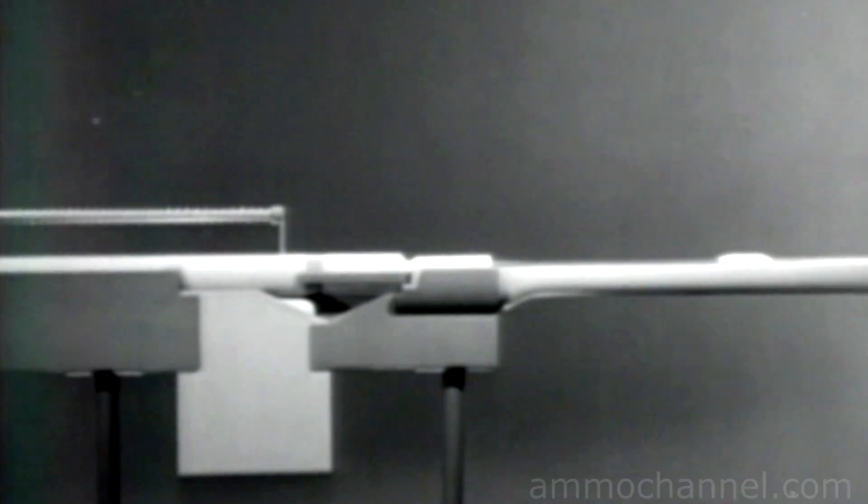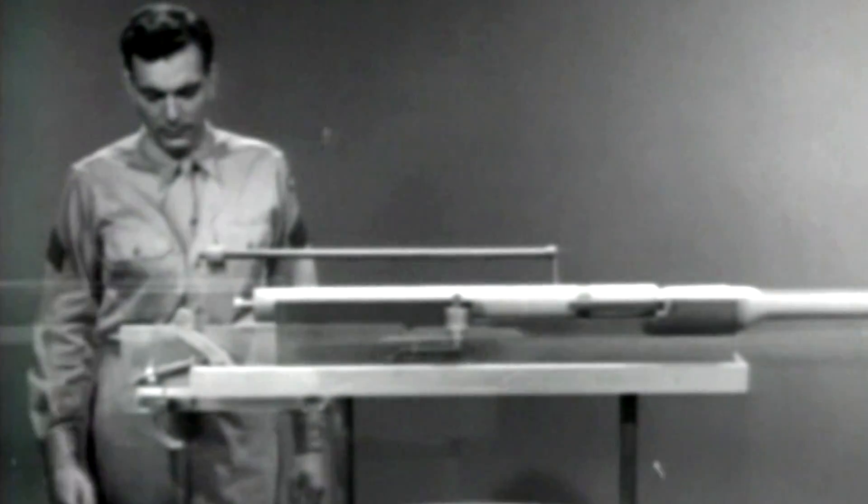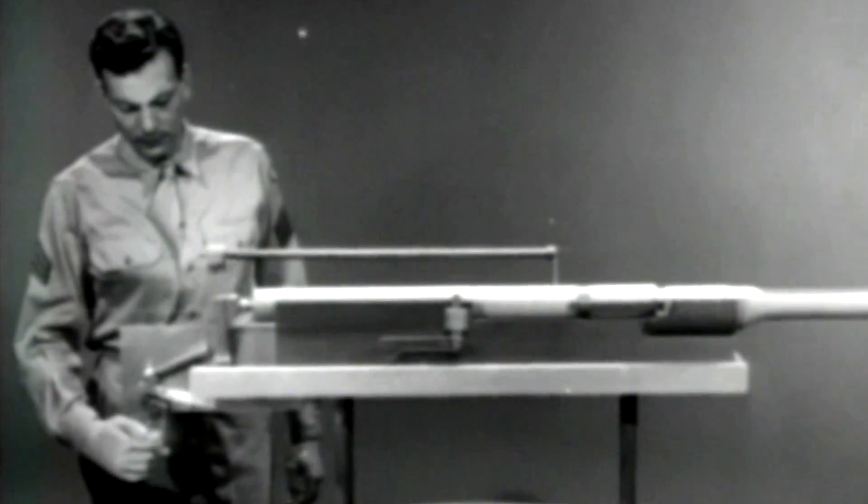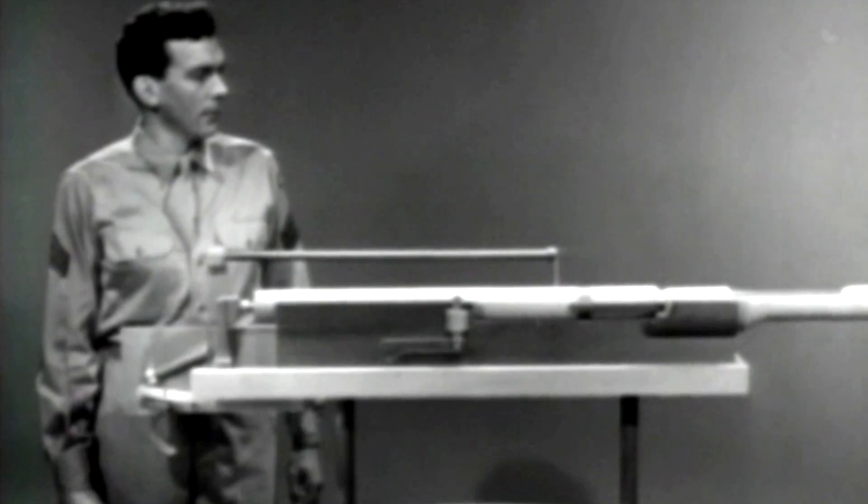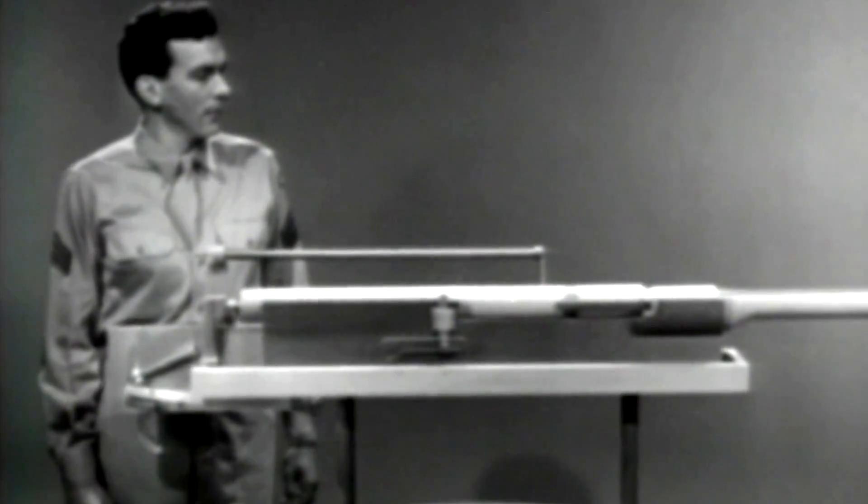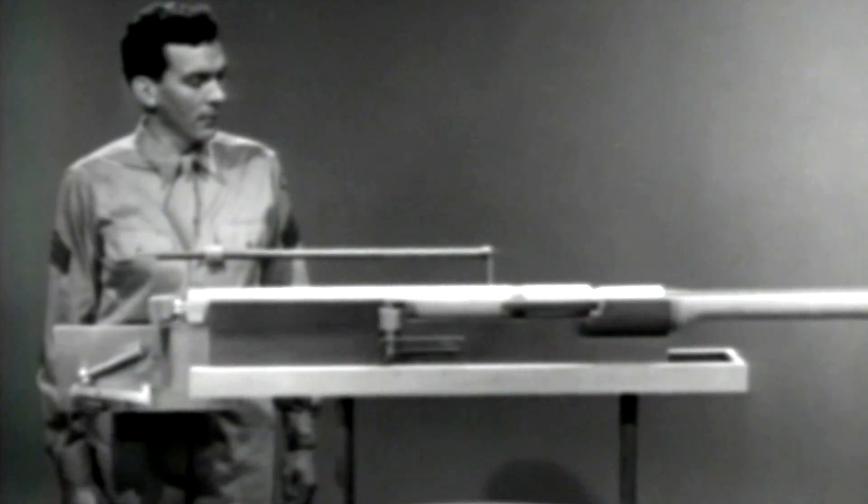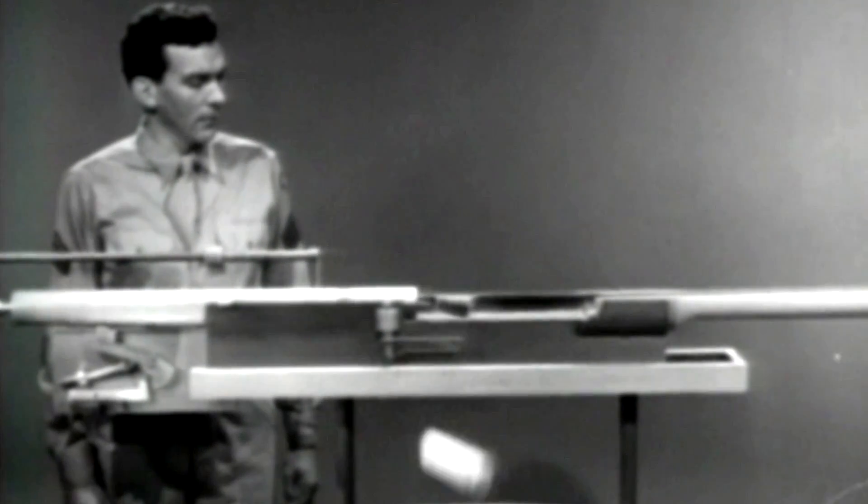The blowback operated weapon uses the rearward force of the explosion to open the bolt. And the recoil operated weapon uses the kick caused by the explosion to move the barrel and barrel extension back, unlocking and opening the bolt as it goes.